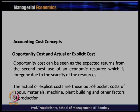The second one is actual or explicit cost. Actual or explicit costs are those out-of-pocket costs for labor, materials, machines, plant buildings and other factors of production. Explicit cost is nothing but the cost incurred for the different inputs getting used in the production — whatever the producer is spending on labor, materials, building, plant, other factors of production. The first category of cost under accounting purpose is opportunity cost and the actual or explicit cost.